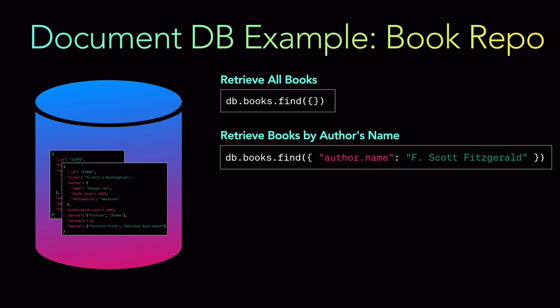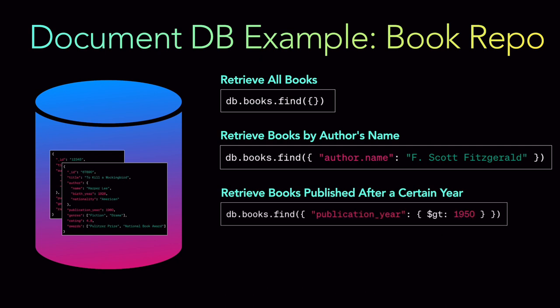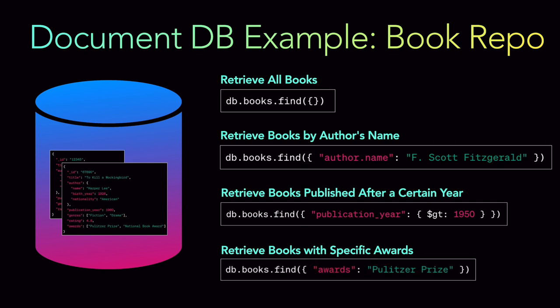To retrieve books published after a certain year, you do db.books.find() providing the publication year with a greater-than operator — for example, returning all books published after 1950. To retrieve books with specific awards, since only one record had awards with multiple values, you do db.books.find() where awards equals 'Pulitzer Prize', and it will return the record that contains that award.